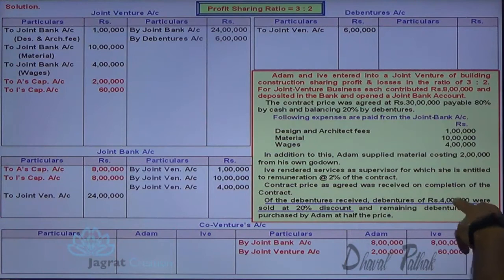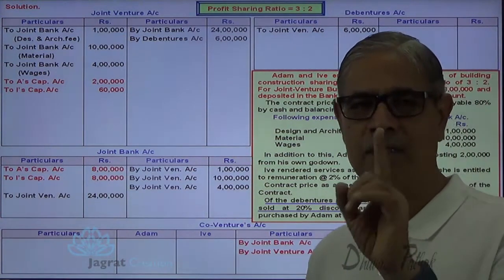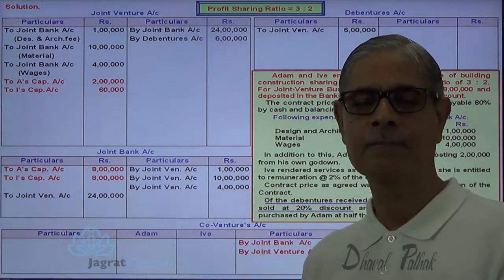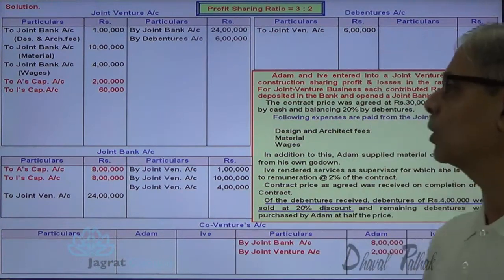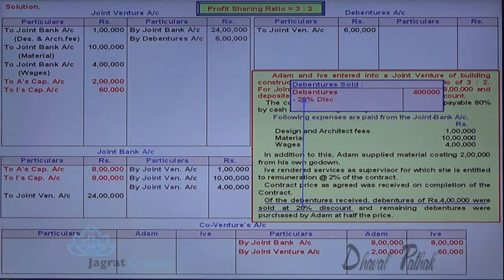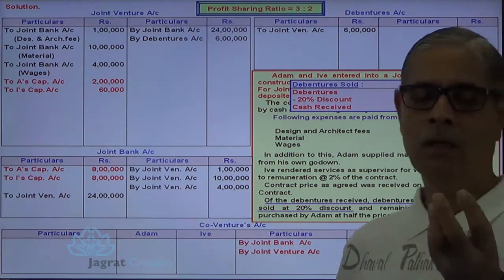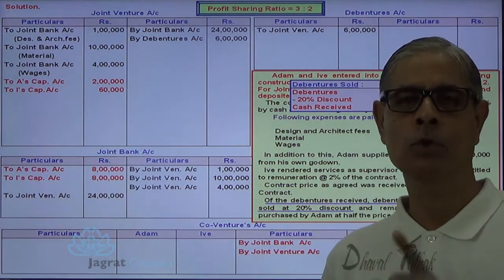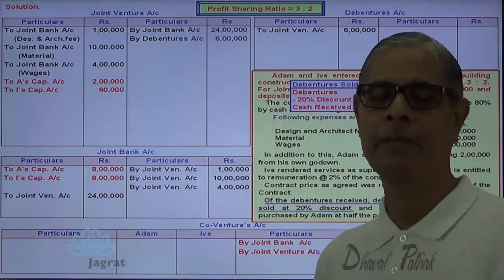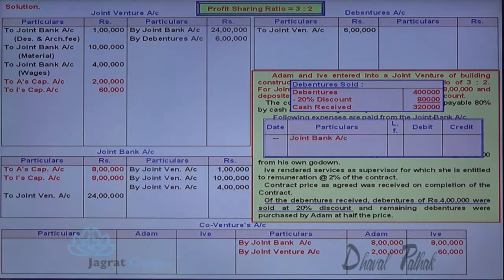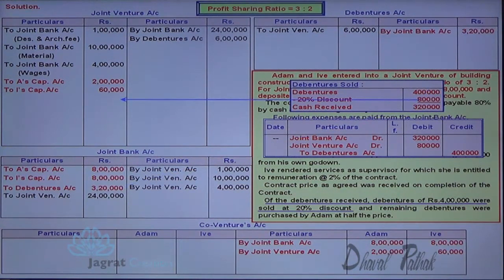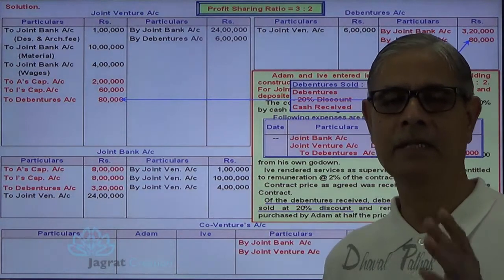Debentures of 4 lakhs were sold at 20% discount. Let us work out the sales price: 4 lakhs minus 20%, so amount received is 3 lakhs 20,000. Debentures of 4 lakhs sold for 3 lakhs 20,000, so loss on sale is 80,000. All the losses of joint venture business will be debited to joint venture account. The entry: joint bank account debit 3 lakhs 20,000; loss debited to joint venture account; to debentures account credit 4 lakhs. Loss on sale of debenture is debited to joint venture account.